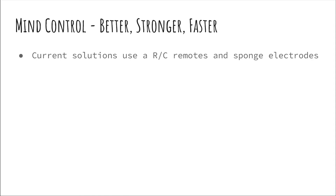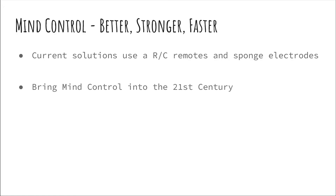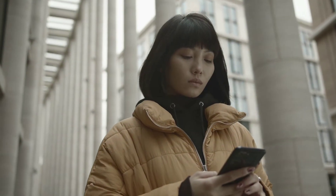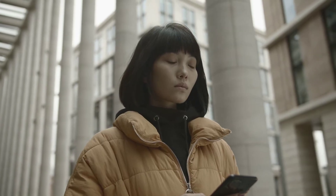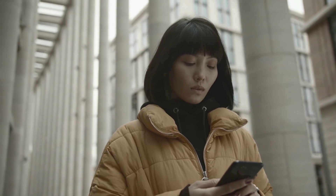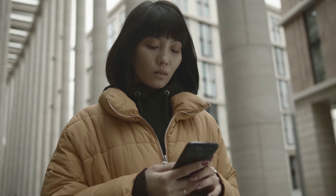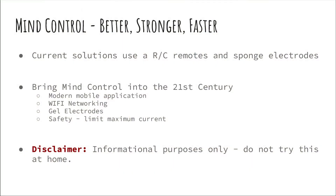The current DIY solutions are either wired or use older RC-style remote controllers and DIY electrodes, so they have some issues such as range and sensitivity limitations. Let's bring mind control into the 21st century with a solution that makes use of a modern mobile application, 802.11 Wi-Fi networking, and safety features to limit the maximum current. Note: this project is for informational purposes only. Putting a current through your body, especially the head, can be dangerous, so please don't try this at home.